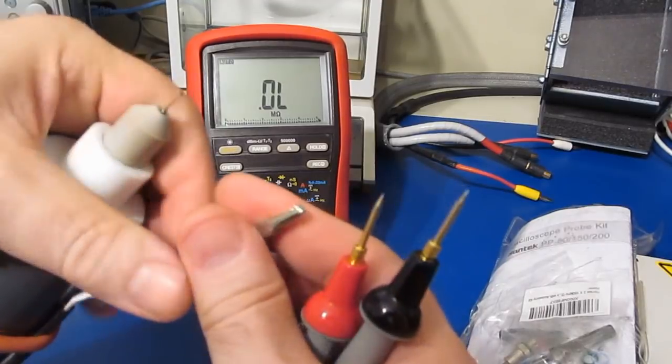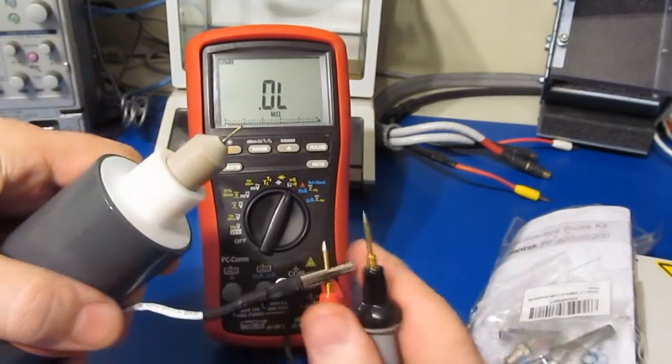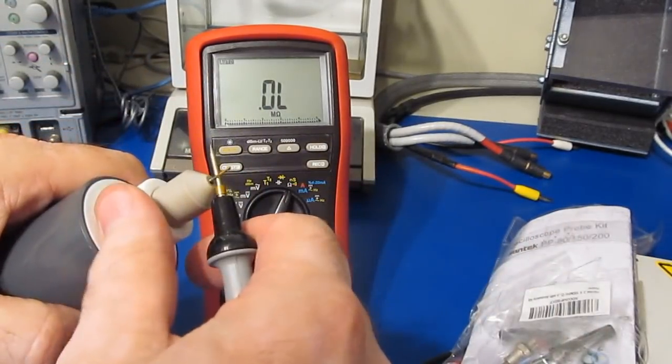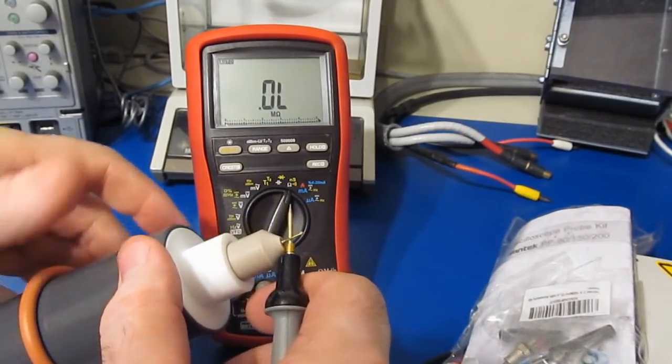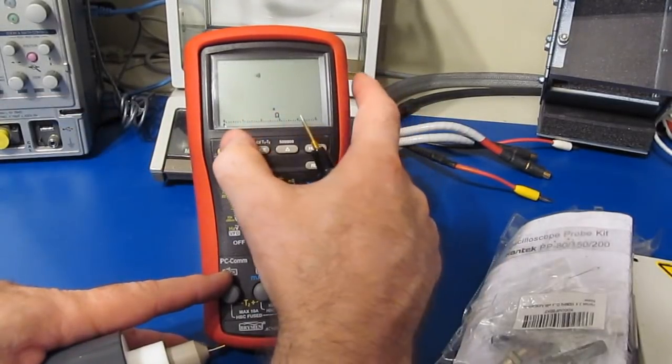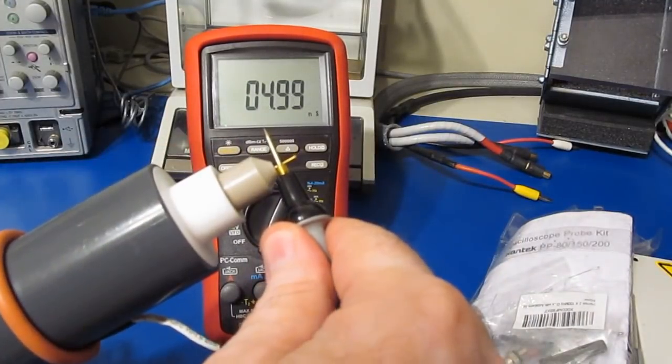Unfortunately, even with this probe being protected, and if the output of that supply were below the 65,000 volts, this probe still wouldn't work for this application. Let me show you why. So let's just measure the input resistance of this probe.